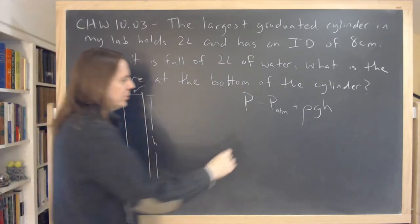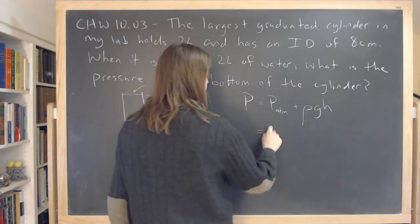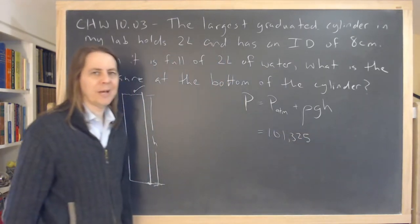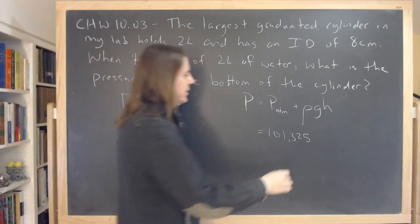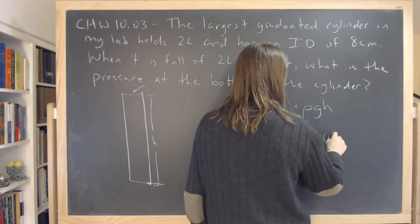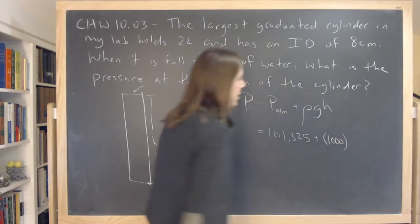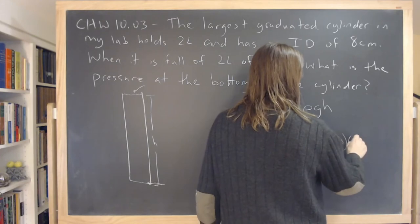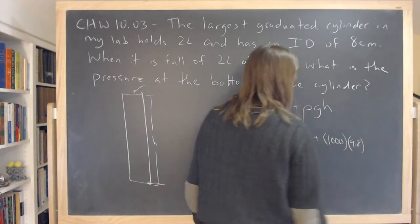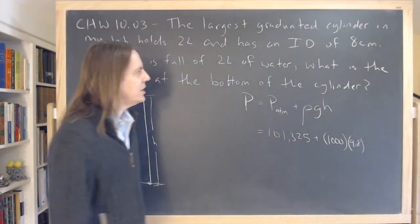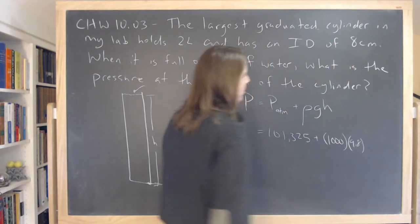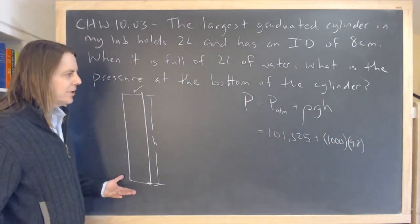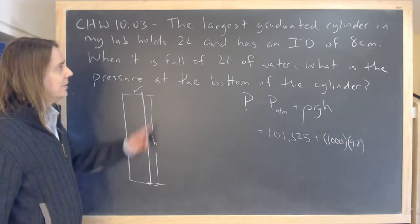So we can start plugging in. Atmospheric pressure is 101,325 pascals. And the density of water in MKS units is 1,000. That's kilograms per meter cubed. And gravity is 9.8. That's acceleration. And H. And you might be tempted to put in 8. But of course, 8 is not the height of the cylinder. I don't have the height of the cylinder.